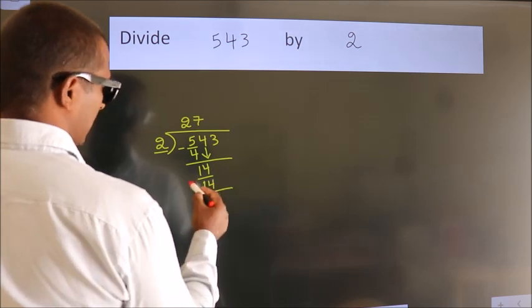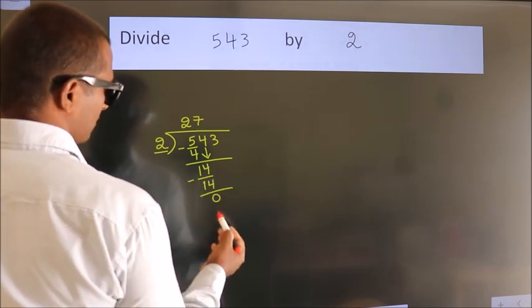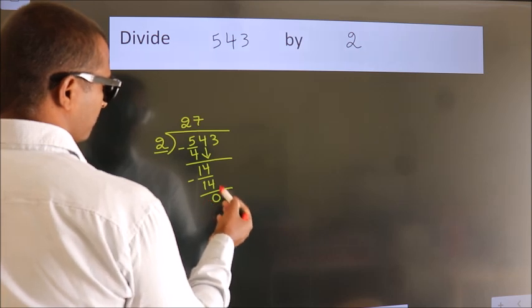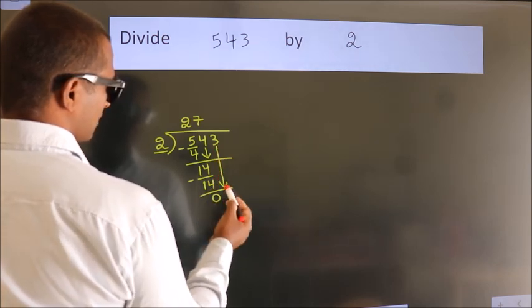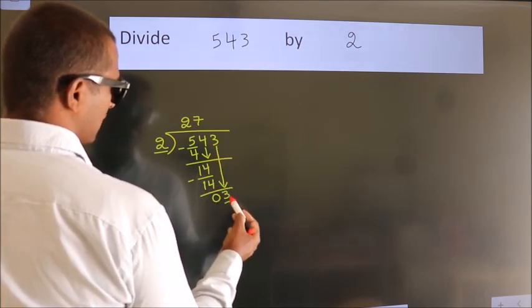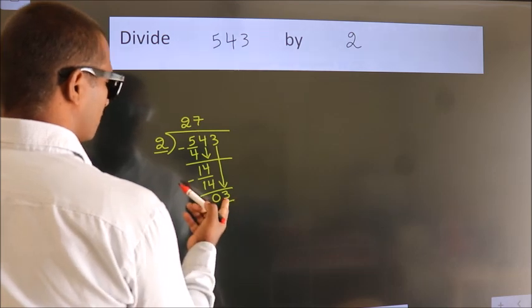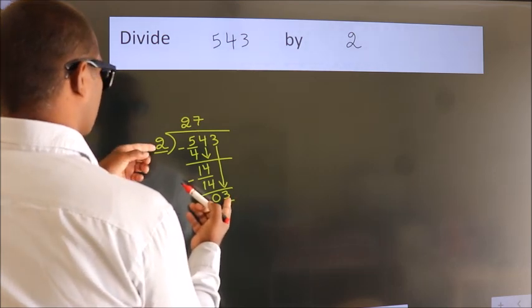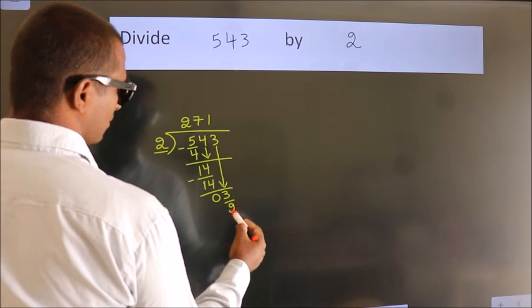Now we subtract. We get 0. After this, bring down the beside number. So 3 down. So 3. A number close to 3 in 2 table is 2 times 1, 2.